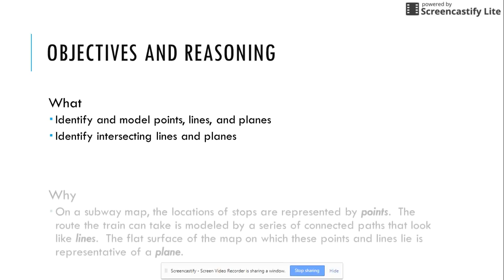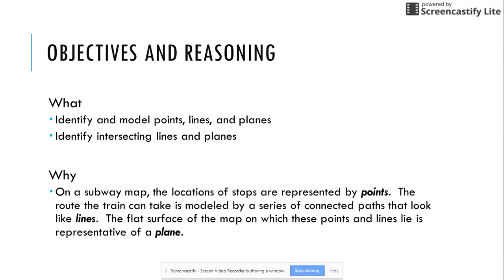Why do we need to learn this material? Well, let's think for a minute that we are looking at a subway map. The locations of stops are represented by points on the map and the route the train can take is modeled by a series of connecting paths that look like lines. You can also think of the tracks that they're on. The flat surface of the map on which these points and lines lie is representative of a plane. So this is one real-world example where we would use points, lines, and planes.